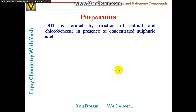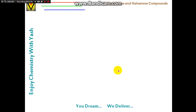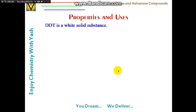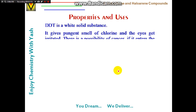DDT is prepared by the reaction of chloral and chlorobenzene in the presence of concentrated sulfuric acid. DDT is a white solid with a pungent chlorine smell that can irritate the eyes. There is a possibility of cancer if it enters the body, and it can be easily absorbed through skin, so great care is needed when it is spread over muddy water.